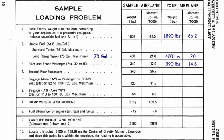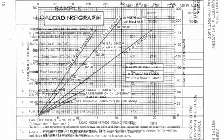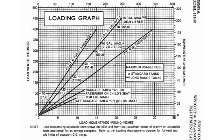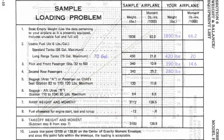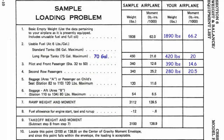Next we go to the second row of passengers. We will have two passengers for this flight and together they weigh 280 pounds. Going back to the loading graph, we find the second-row passenger line, follow 280 pounds until it hits the line, go down — that's 20.5. So we put 20.5 as the moment for the second row of passengers.